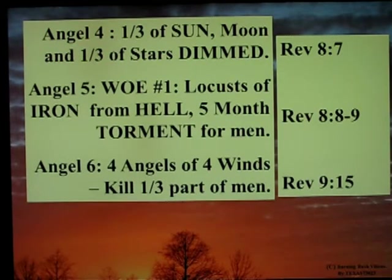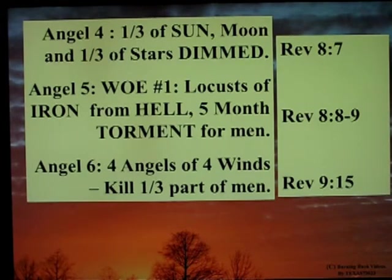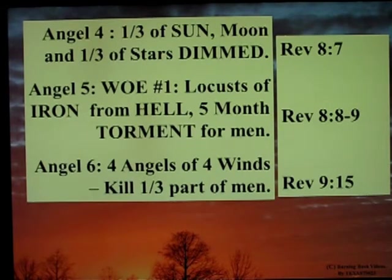Angel number four: one third of the sun, moon, and a third of the stars are dimmed. Angel five — the first woe: locusts of iron from hell, five months of torment for men. Angel number six is the second woe — four angels of four winds — and they kill a third part of the men.